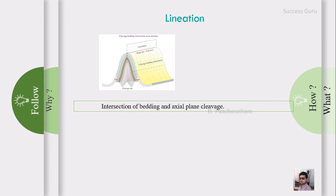The next type is intersectional lineation. The first example is the intersection of bedding and axial plane cleavage. Consider a fold like an anticline - you can see bedding planes and axial plane cleavage that we have already seen in the foliation class. When there is an intersection of two planes, you find the presence of a line. You can see many lines here - these line-like structures could be called lineations. This type of intersectional lineation is formed due to the intersection of bedding planes and axial plane cleavage.